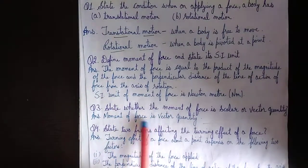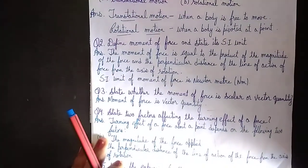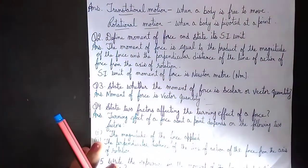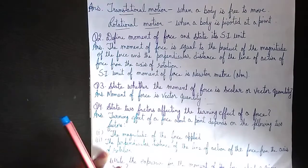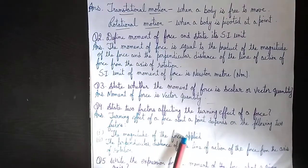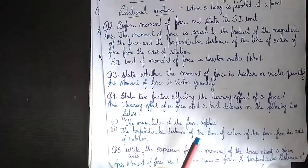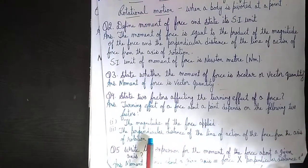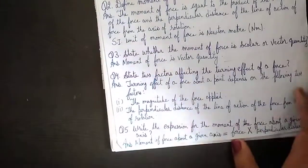State whether the moment of force is scalar or vector quantity — it is a vector quantity. State two factors affecting the turning effect of force. The turning effect of force about a point depends on two factors: the magnitude of the force applied, and the perpendicular distance of the line of action of force from the axis of rotation.